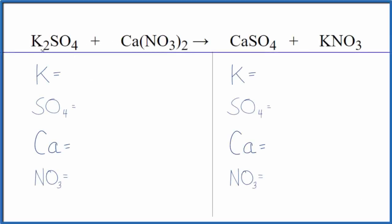In this video, we'll balance the equation for K2SO4 plus Ca(NO3)2. We have potassium sulfate here, and then we have calcium nitrate.